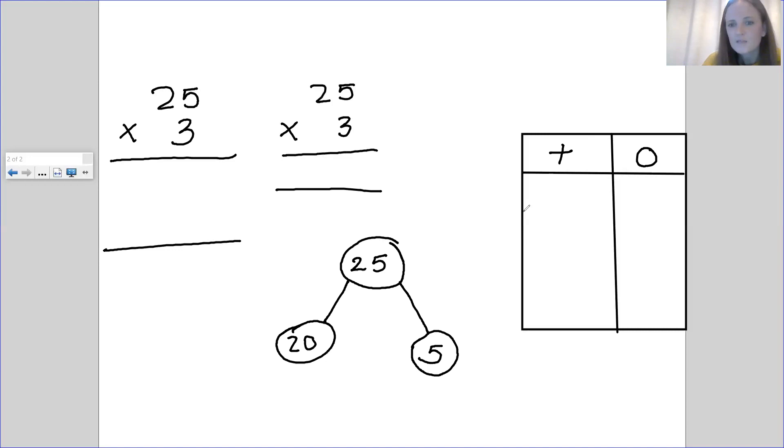With our place value mat, you need to have three equal groups. Because we are timesing it into three equal groups. And in each group, we would have 25.